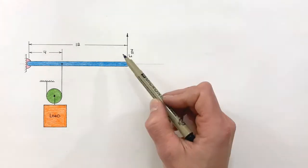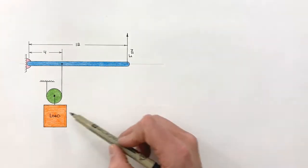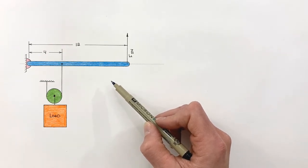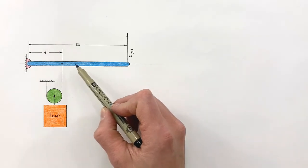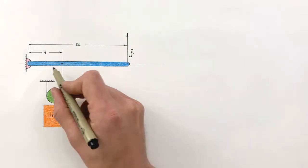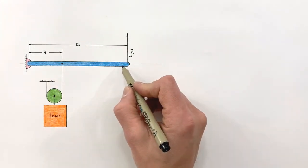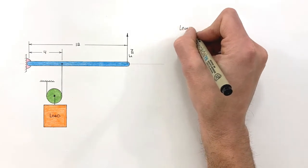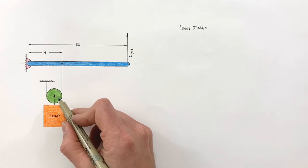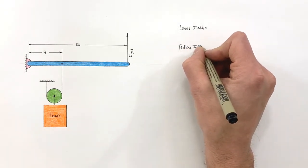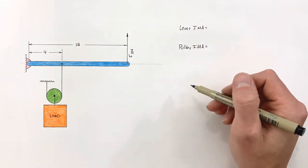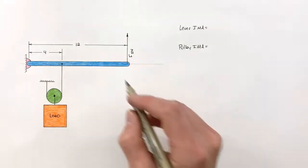What we're trying to do is figure out the IMA of this compound machine. In order to find the IMA of a compound machine, we need to look at the IMA, or ideal mechanical advantage, of each individual simple machine within the compound machine. So here we have a lever — we'll work out the IMA for that — and separately we have a pulley, and we'll work out the IMA for that pulley. Then I'll show you how to combine them to get the total IMA.